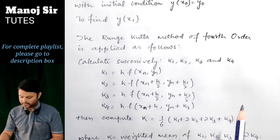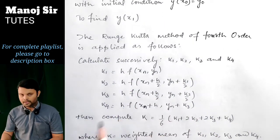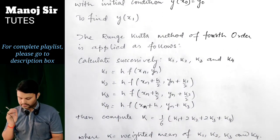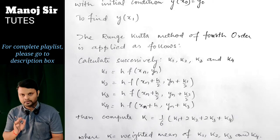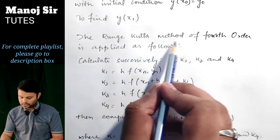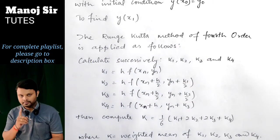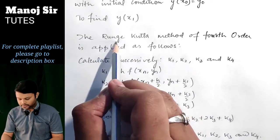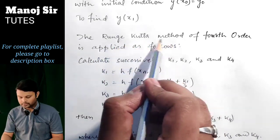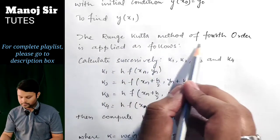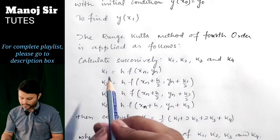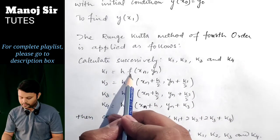One important thing to note: if in the problem only 'Runge-Kutta method' is written without specifying the order, you must still apply the Runge-Kutta method of fourth order. Do not go for the second order method. The formula begins with k₁ = h·f(xₙ, yₙ).